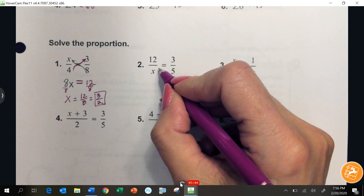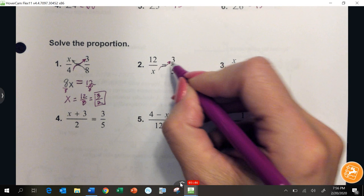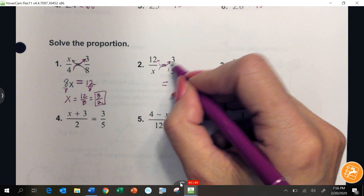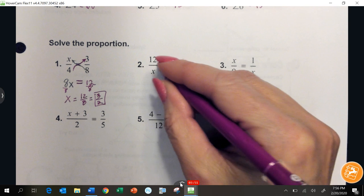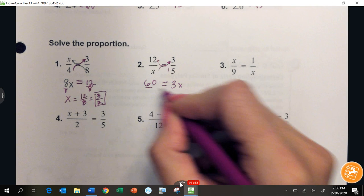Number 2. I'm going to cross multiply up. 12 times 3 is 36. The other side is going to stay where it is. I'm going to cross multiply up, and I'm going to get 6x on the other side. Divide both sides by 6, x equals 6.